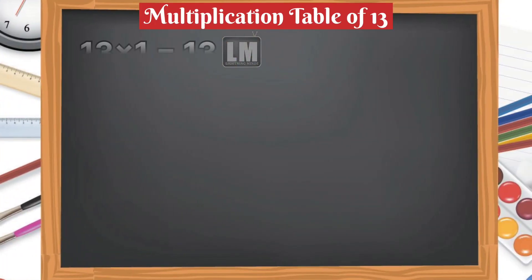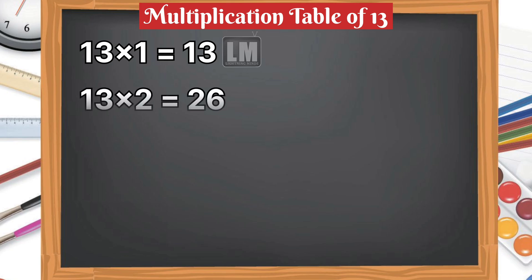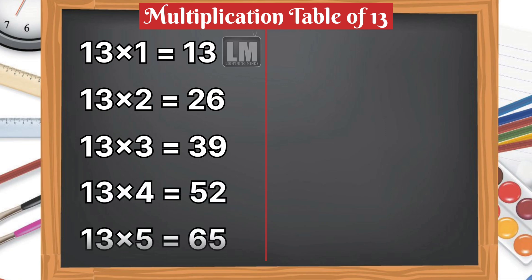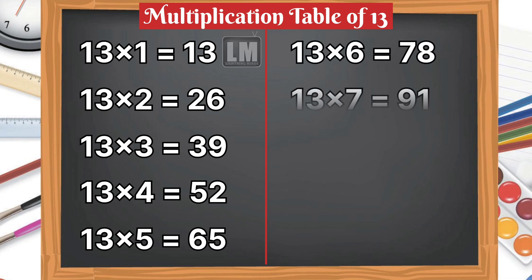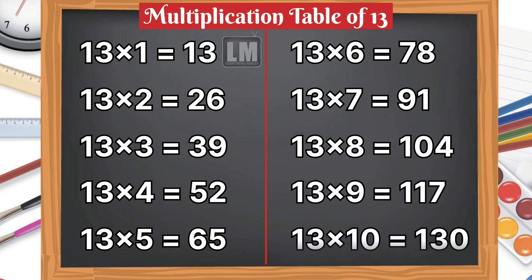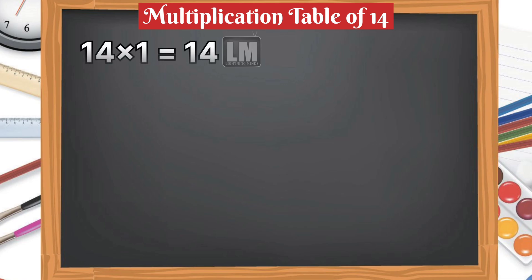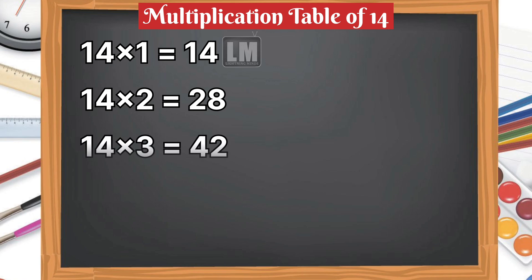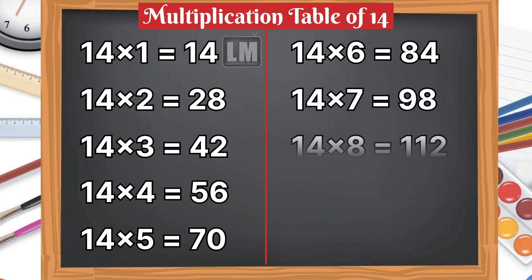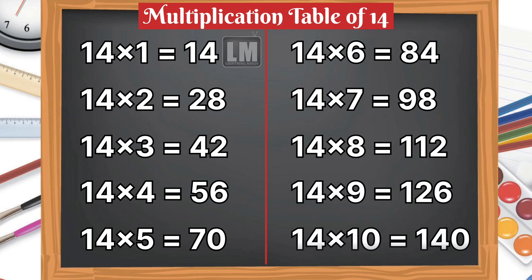Let's learn table of 13. Let's learn table of 14. 14 1s are 14, 14 2s are 28, 14 3s are 42, 14 4s are 56, 14 5s are 70, 14 6s are 84, 14 7s are 98, 14 8s are 112, 14 9s are 126, 14 10s are 140.